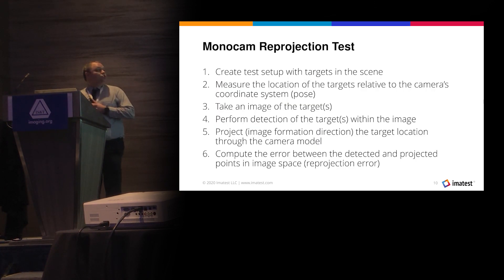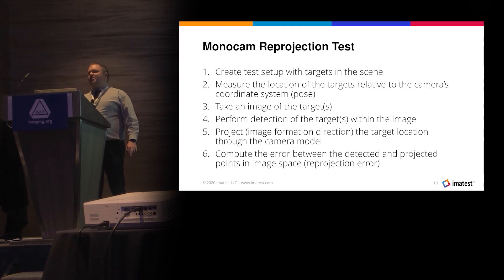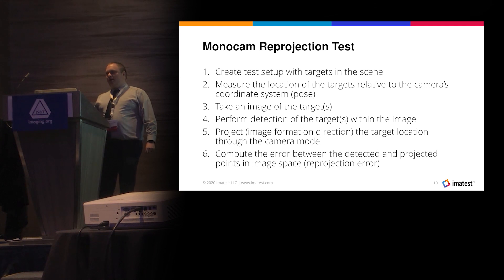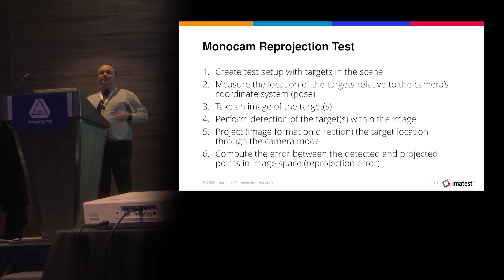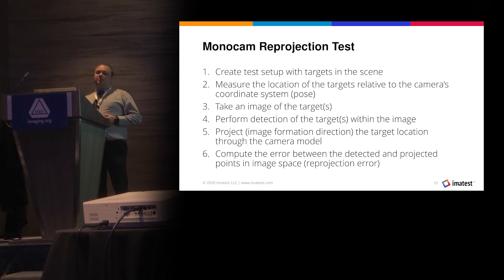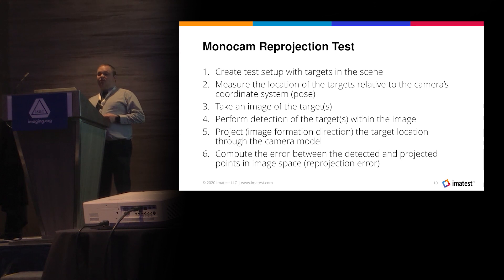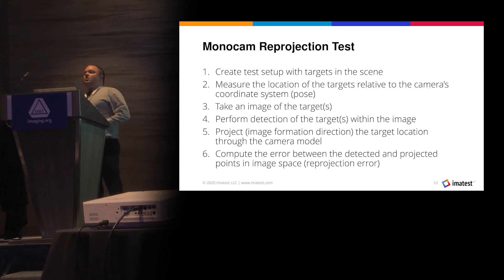Switching to the camera validation tests — I am intentionally keeping these somewhat abstract to enable both future work as well as to outline the process. The first one I'm calling a model cam reprojection test. You have a setup with some number of targets in the scene. You measure the location of the targets relative to the camera's coordinate system or its pose, capture an image of those targets, perform detection of those targets within the image, then project the world point of that target through your camera model to form an image coordinate. Then compare your measured with your projected coordinates. This is typically a reprojection error from the optimization process.